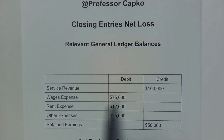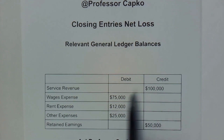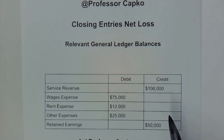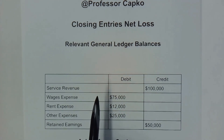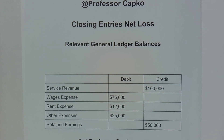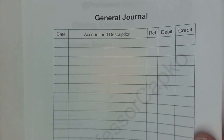Here we've got some balances in our service revenue, wages expense, rent expense, other expenses, and retained earnings. They are appropriately debit or credit balances for us to work from. We're going to close out the accounts for service revenue, wages expense, rent expense, and other expenses, and then close out the income summary account to the retained earnings account. Let's do that using some general journal entries.